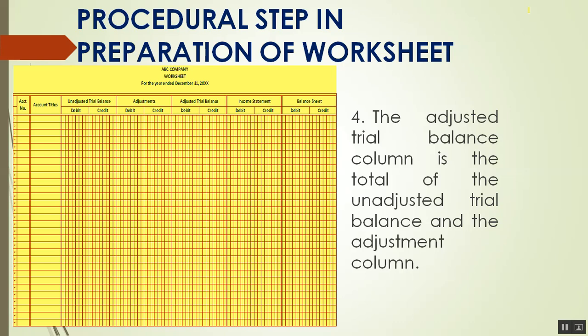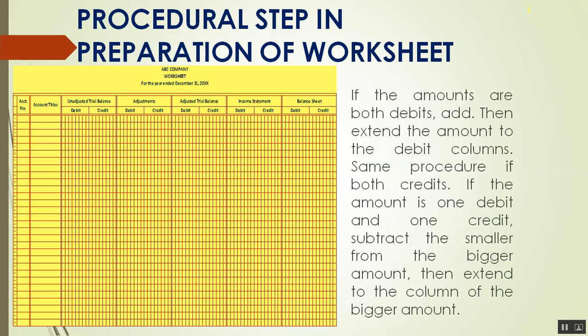The adjusted trial balance column is the total of the unadjusted trial balance and the adjustment columns. If the amounts are both debit, add them and extend to the debit column; same procedure if both are credits. If one is debit and the other is credit, subtract the smaller from the bigger amount, then extend to the column of the bigger amount — that is, place the difference under whichever side has the larger amount.